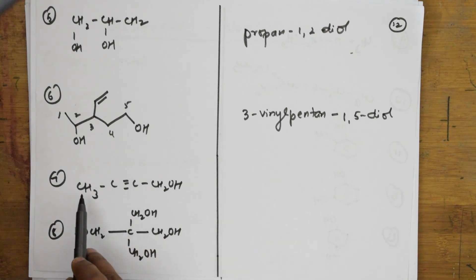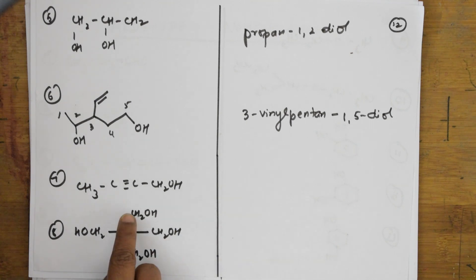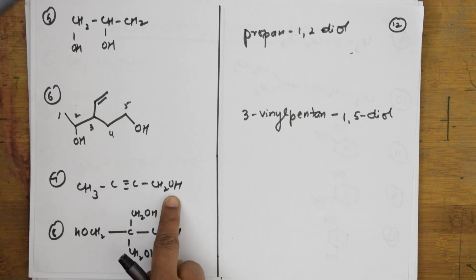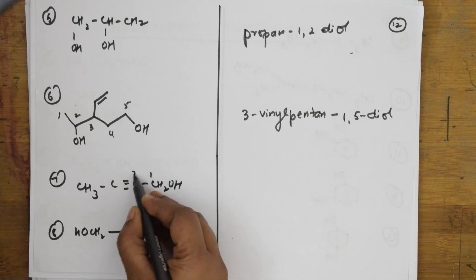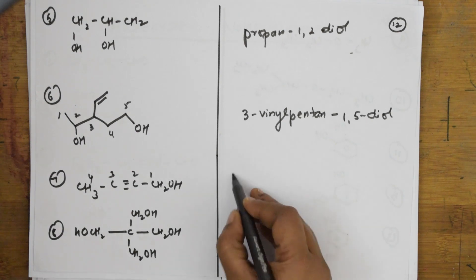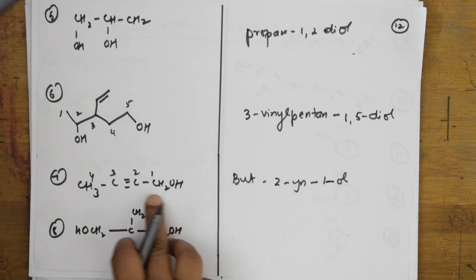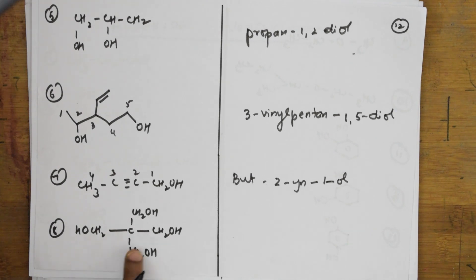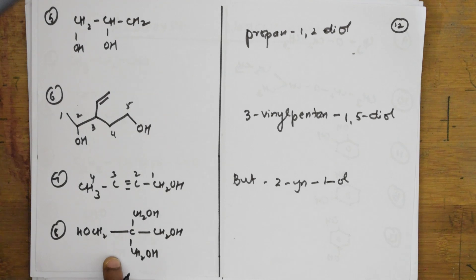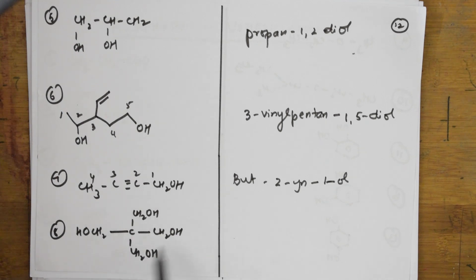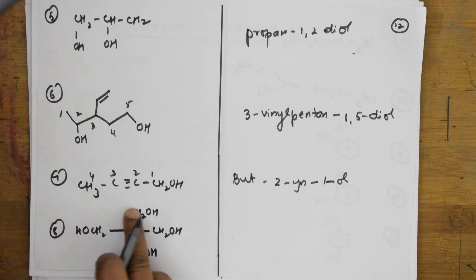For this next compound: the parent chain is one, two, three, four — four carbons, so butane. Both an alkyne and an alcohol are present. As per the preference order, alcohol is given first preference. With the alkyne at position two and the alcohol at position one, this is but-2-yn-1-ol.